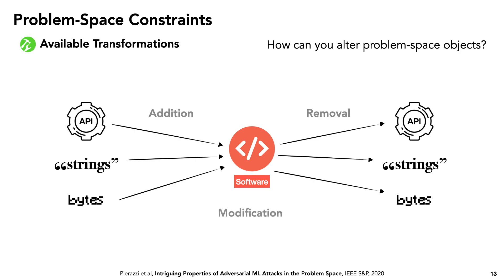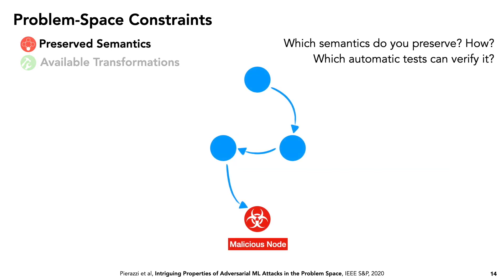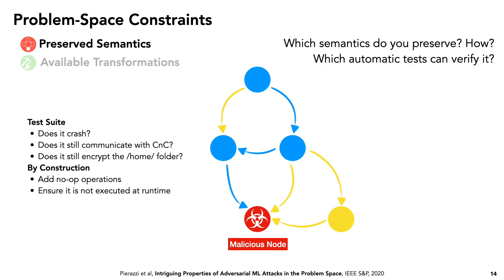We also need to define which semantics we need to preserve. Say we have part of a control flow graph where the malicious behavior occurs at the red node, and we want to ensure that red node is still reachable in the adversarial malware. Removal might not be possible, but adding yellow edges and a yellow node would be a valid transformation because the red node is still reachable. In practice, semantic equivalence is undecidable, so we define a test suite to check that behavior is preserved — does it crash, does it still phone home, read and write the correct files. Alternatively, you might preserve semantics by construction, by adding no-op instructions or ensuring added code isn't executed at runtime.